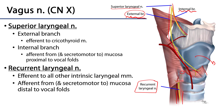Some folks call the recurrent laryngeal nerve beyond the cricoid margin the inferior laryngeal nerve, but more often it's referred to as the recurrent laryngeal nerve throughout its course. The recurrent laryngeal nerve is efferent to all of the intrinsic laryngeal muscles, with the exception of the cricothyroid. It's also somatic sensory and secretomotor to the mucosa inferior to the vocal folds. So in summary: the internal branch of the superior laryngeal nerve serves above the vocal folds, and the recurrent laryngeal nerve serves below the vocal folds.